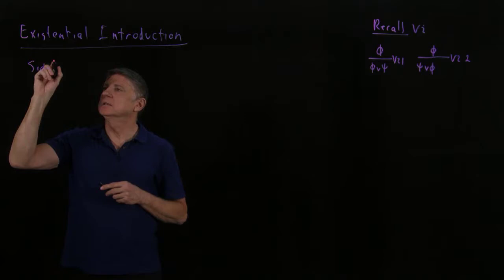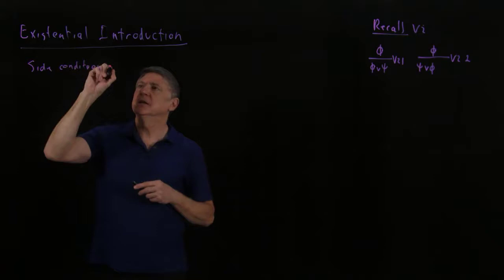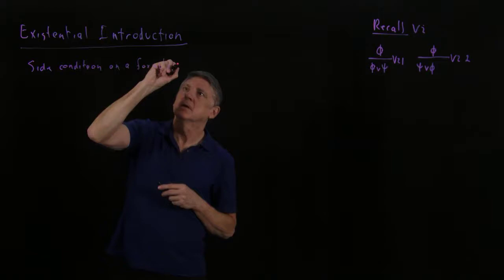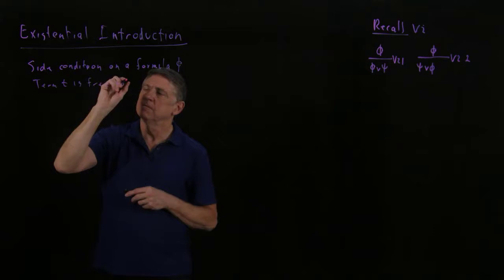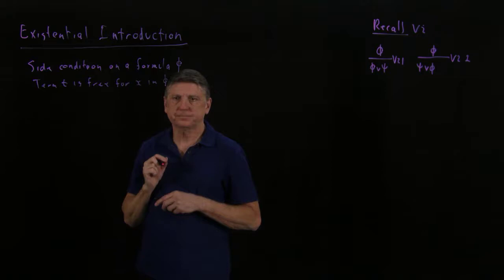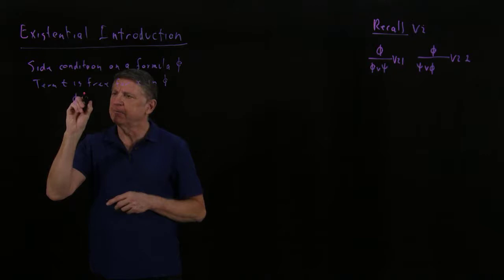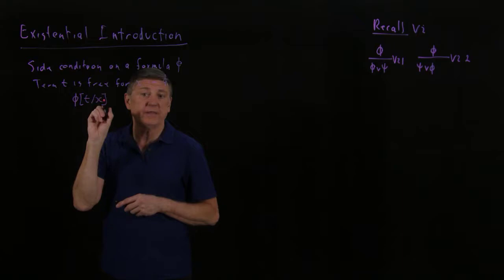So what we'll have is our usual side condition. And this will be a side condition on a formula phi, which is that a term t is free for x in phi. And the way that this is written is if we have a formula and t has been substituted for x in a way that doesn't cause t to be bound.